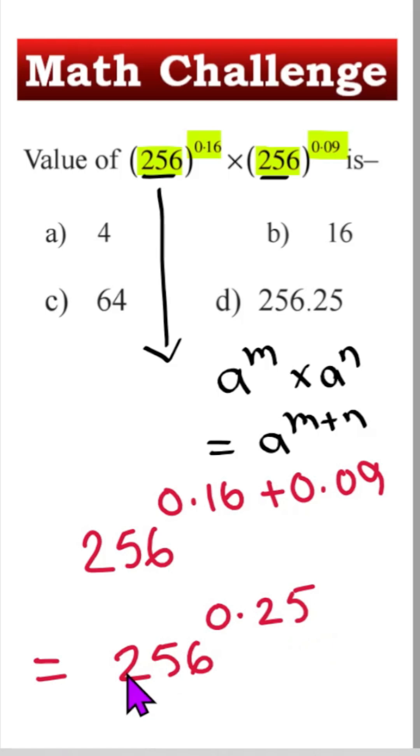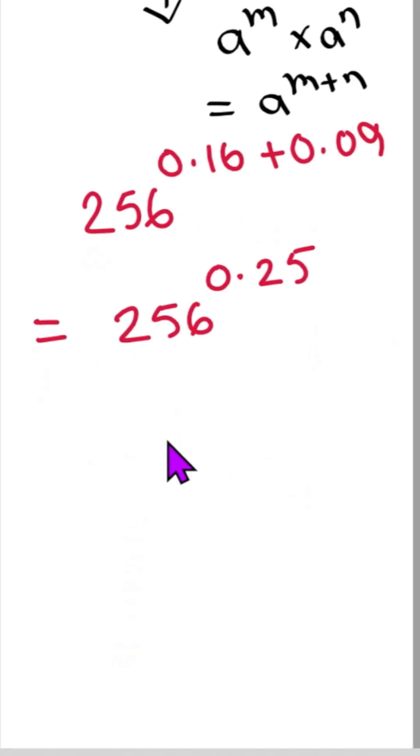Our condition is we cannot use a calculator. So, this 256, we can write as 2 to the power 8, right? And this 0.25, we can write as 25 divided by 100. So once we divide each other, here is 1 and here is 4 because 100 divided by 25 is 4.